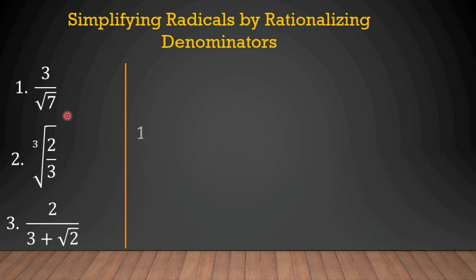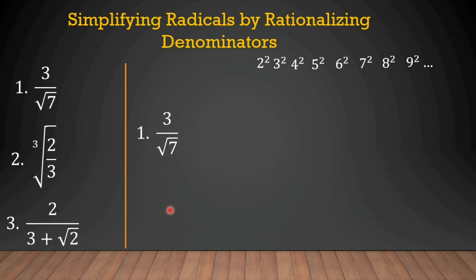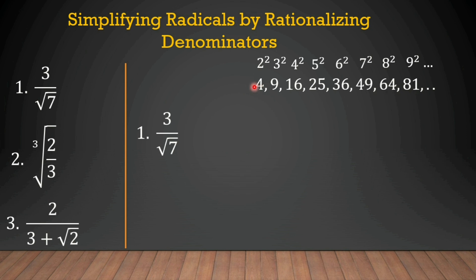For example number 1: 3 divided by the square root of 7. What do we multiply by the square root of 7 to make it a perfect square? Numbers with square roots have exponents of 2 — for example, 2 squared, 3 squared, 4 squared, 5 squared, 6 squared, 7 squared, and so on. So 2 squared equals 4, 3 squared equals 9, and the square root of 4 is 2, the square root of 9 is 3, the square root of 16 is 4 — these are perfect squares.